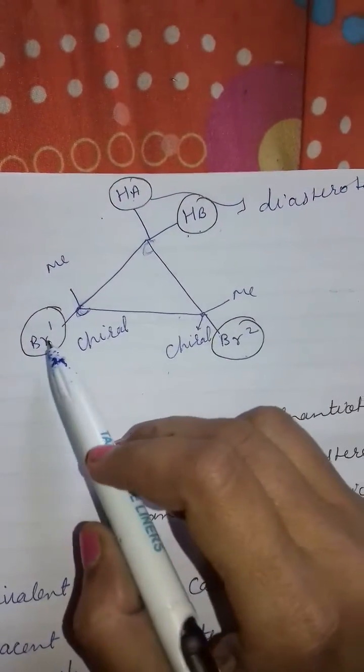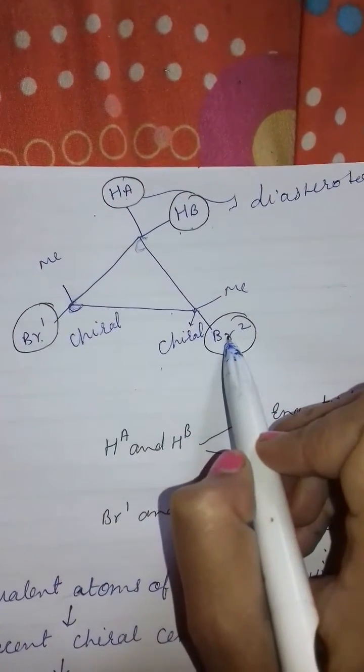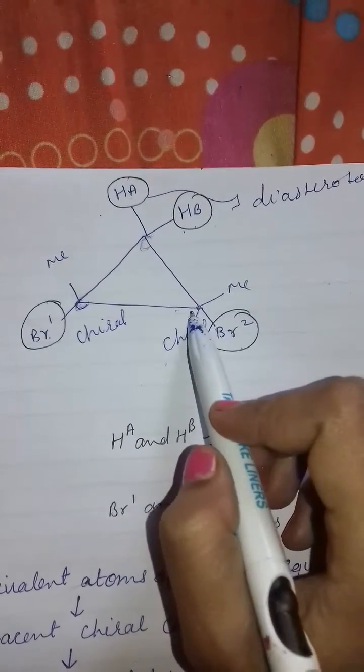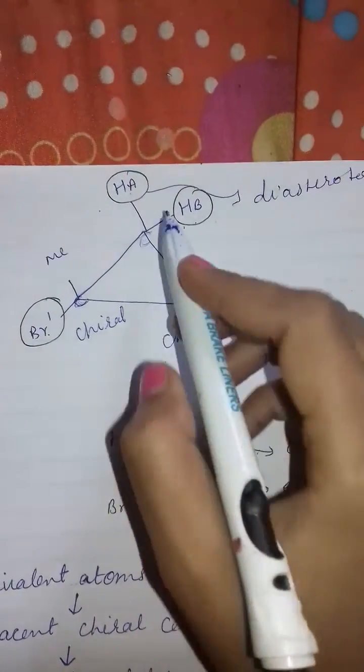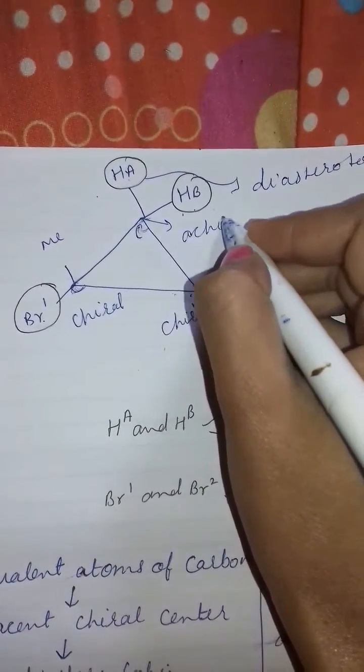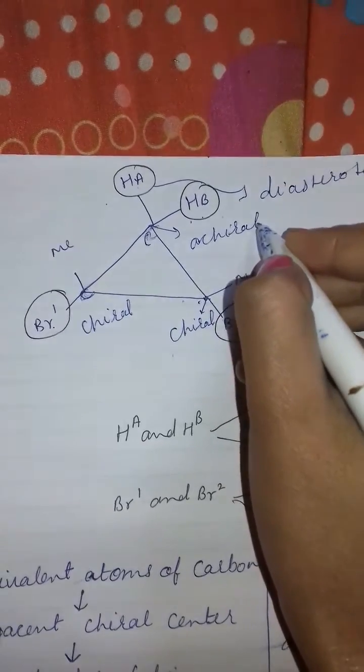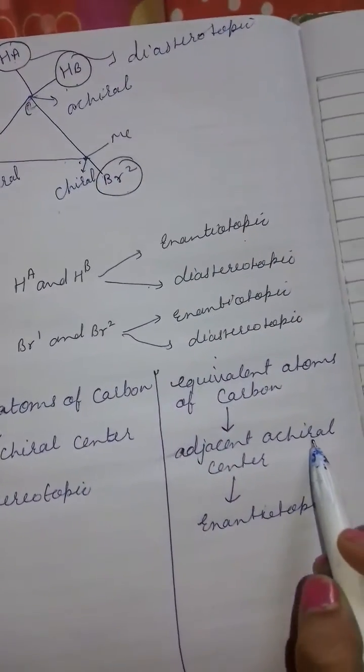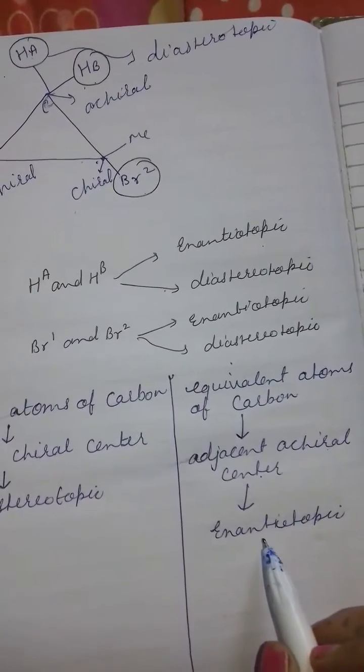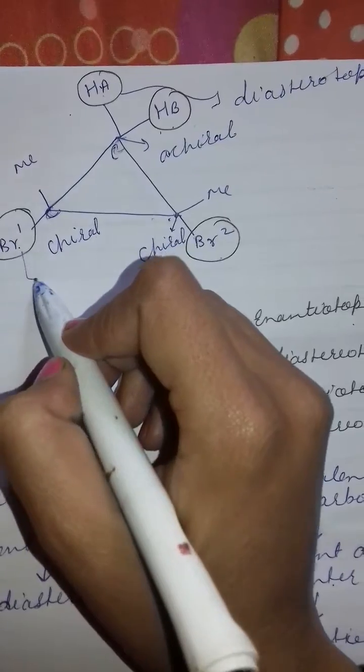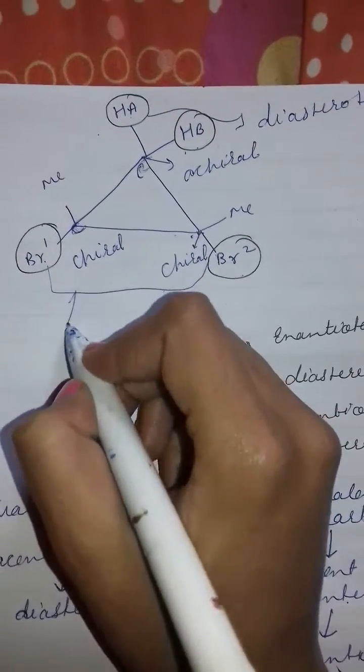Now we will find Br1 and Br2 are either enantiotopic or diastereotopic. To see this, its adjacent carbon is this. And this carbon is achiral. Achiral. So if adjacent achiral center is present then it will be enantiotopic. So these Br1 and Br2 are enantiotopic.